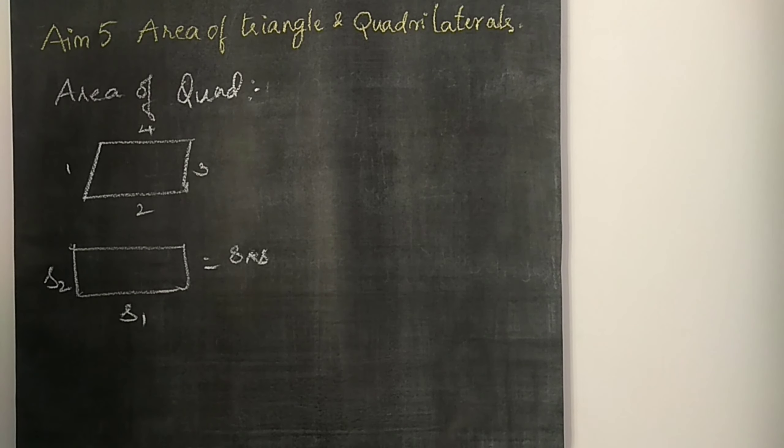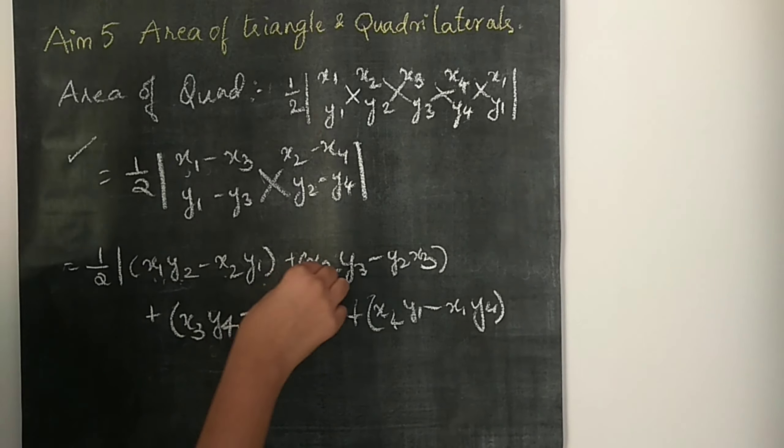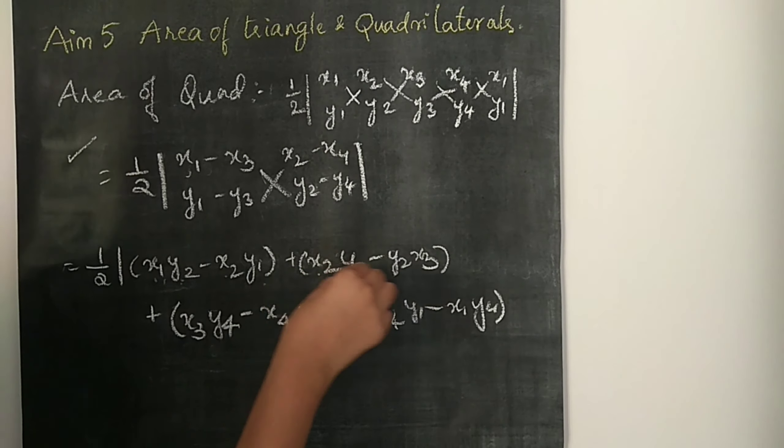For quadrilateral area also, we have three formulas. The first is: half into the matrix with x1, x2, x3, x4, x1 in the top row and y1, y2, y3, y4, y1 in the bottom row. The second formula is: half into (x1 minus x3) into (y2 minus y4) minus (x2 minus x4) into (y1 minus y3) — using the absolute value, so if negative it becomes positive. The third is the biggest formula. It is better to use the second one since it requires only 4 cross multiplications and is easier to remember.